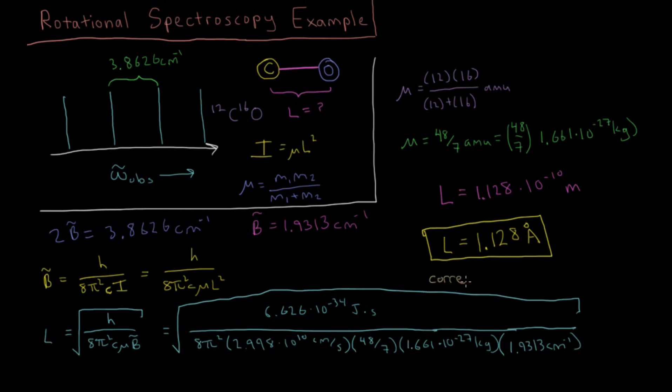We only used about 4 sig figs in most of our physical constants there. But this bond length is correct to 4 sig figs. And this is the real power of microwave spectroscopy is some of the most valuable data for determining the bond length of molecules came from rotational spectroscopy, both ro-vibrational and microwave, in the early days of chemistry in the first half of the 20th century.